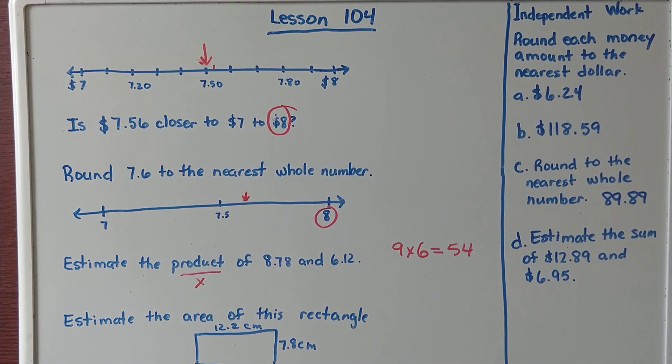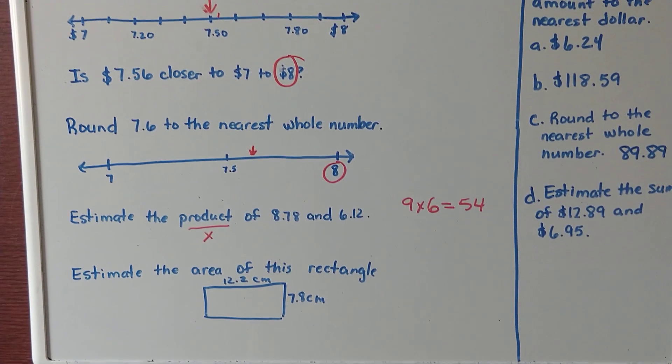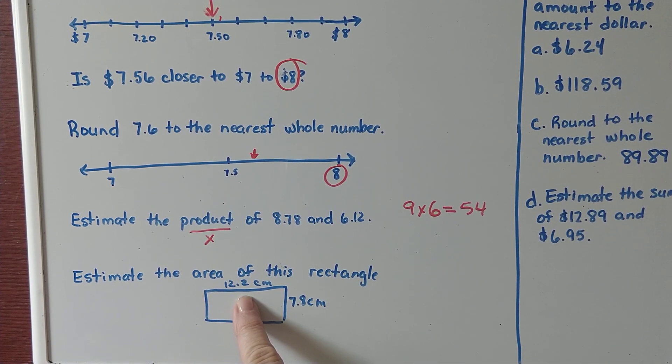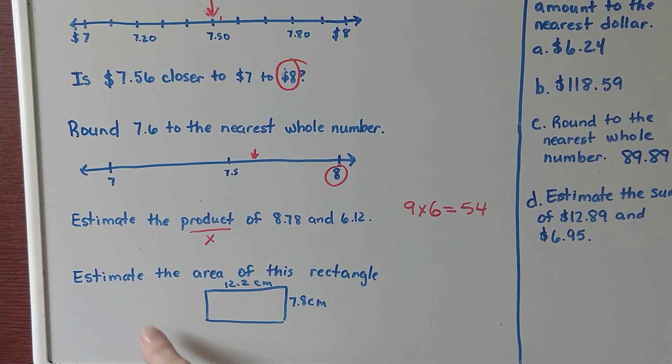Now we are going to estimate the area of this rectangle. When we estimate, we are going to round it to the nearest whole number. The way that we find area of a rectangle is multiplying the length times the width.